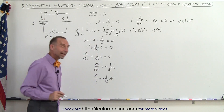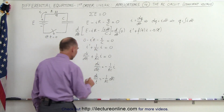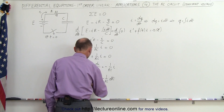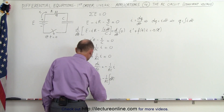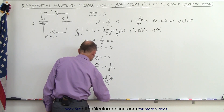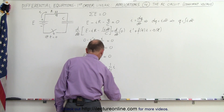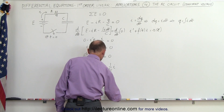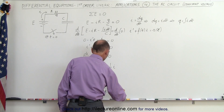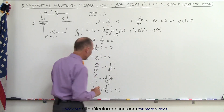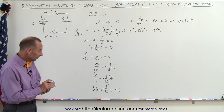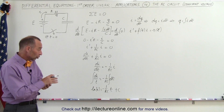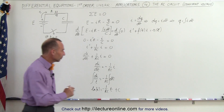Now we can integrate both sides of the equation. Integrating the left side and the right side, we get the natural log of I equals minus 1 over RC times t plus a constant of integration.